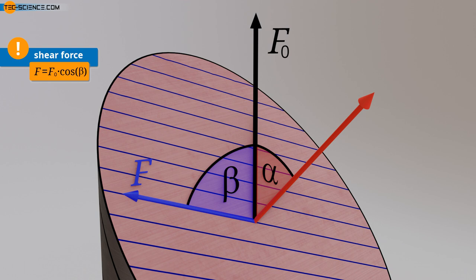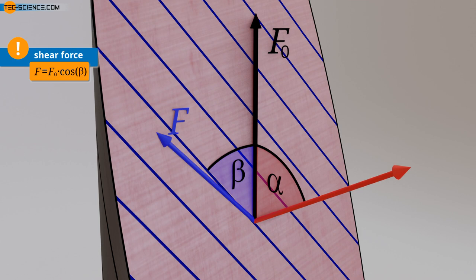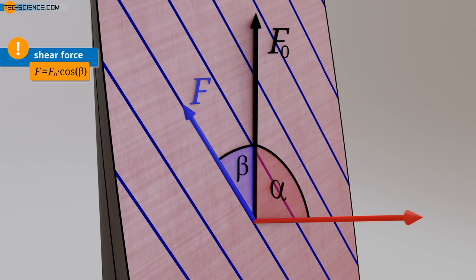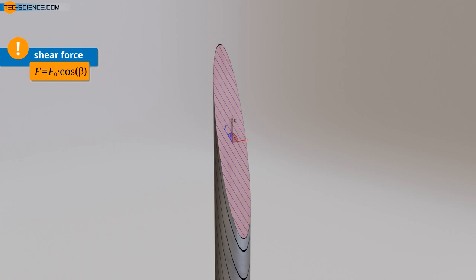Obviously, the greatest force in slip direction occurs when it is oriented at a small angle beta to the tensile axis. The slip plane is then inevitably very steeply inclined, meaning a large angle alpha. However, with such a steep orientation of the slip plane, its area also increases. As a result, significantly more atomic bonds between the lattice planes now have to be sheared off. Even the larger shear force is not sufficient to shear off the plane due to the disproportionately increased area of the slip plane.